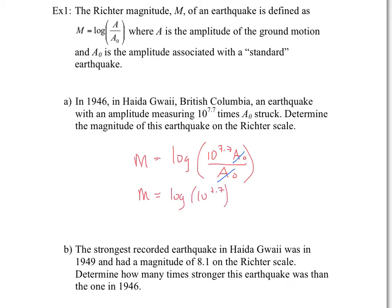If you remember log rules, you can take the exponent of the argument and bring it out front. So m equals 7.7 times log 10. Notice this is log base 10, and we know that log base 10 of 10 equals 1. So m equals 7.7. This describes an earthquake with magnitude 7.7, meaning the earth is moving 10 to the power of 7.7 times more than the average movement.